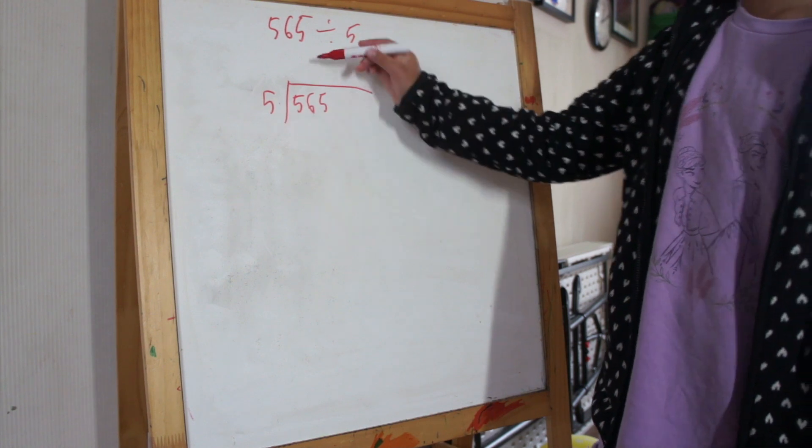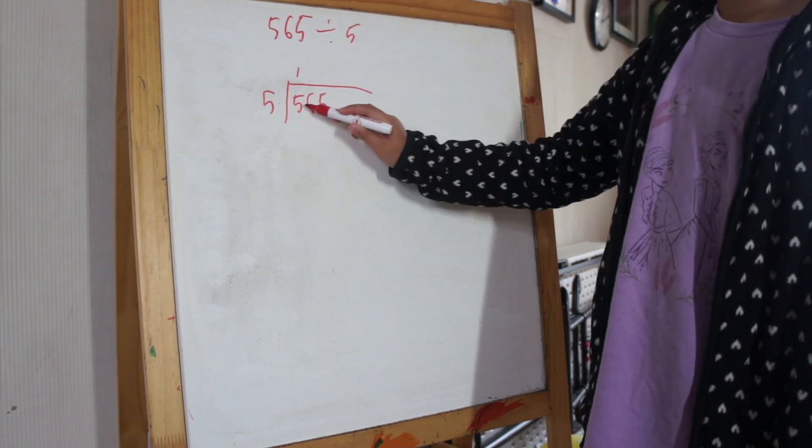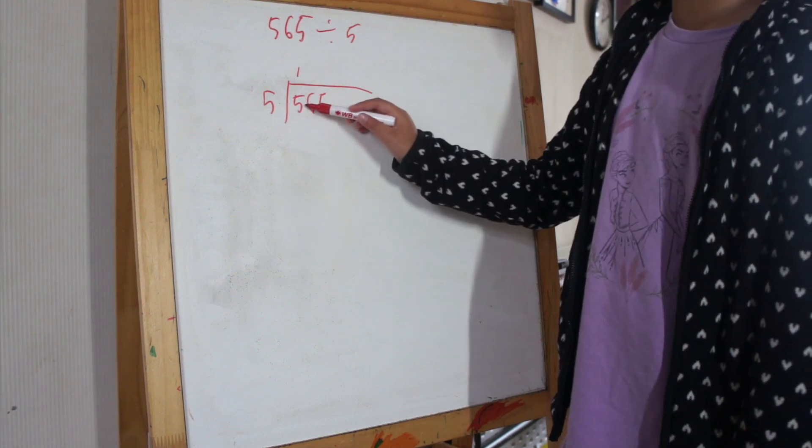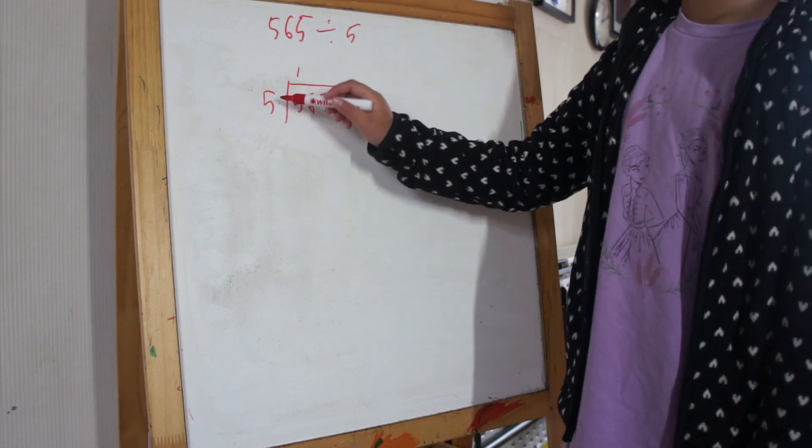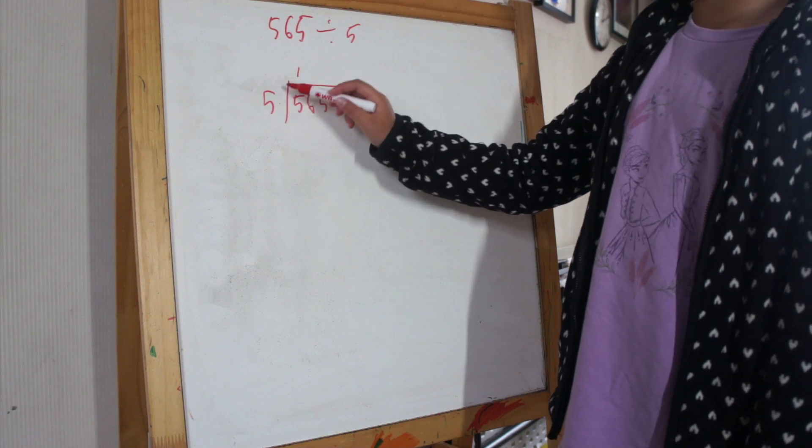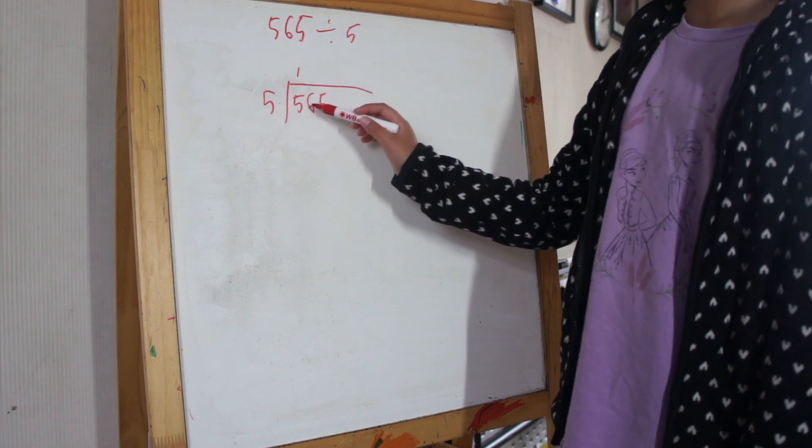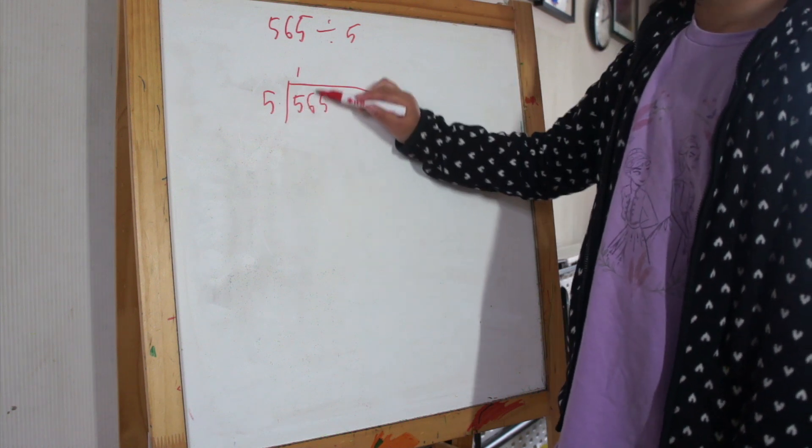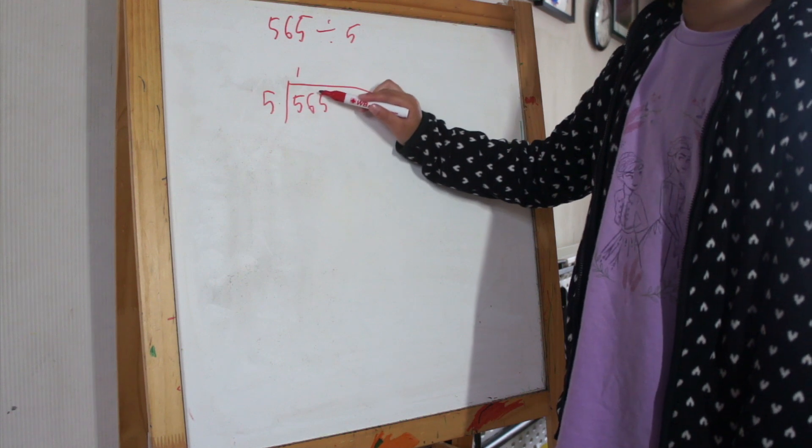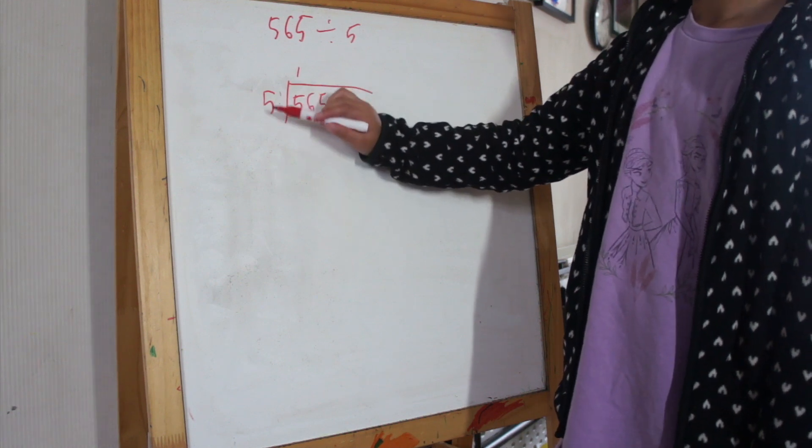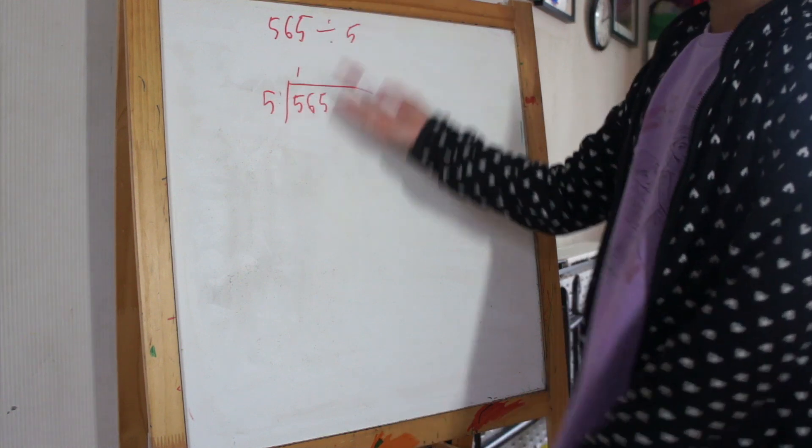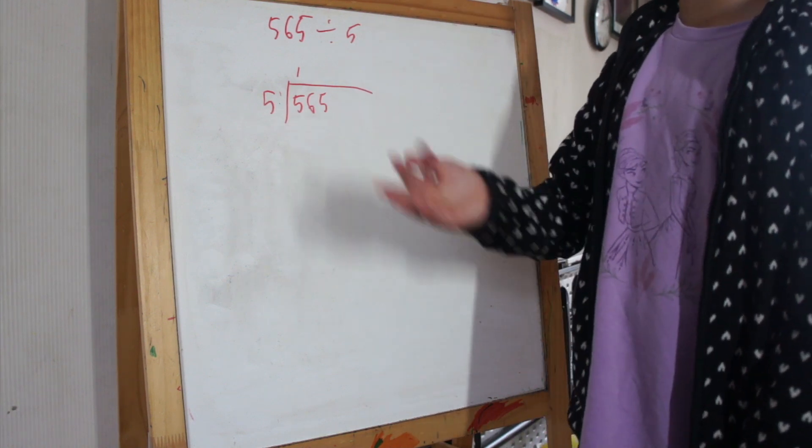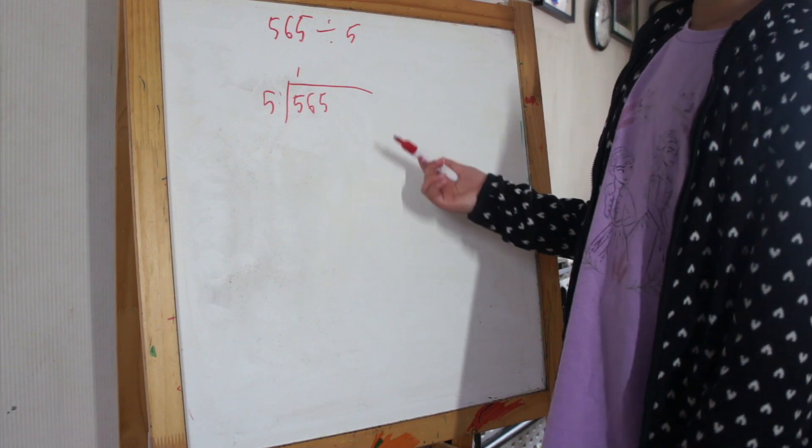Also, if this was 1 and 5 couldn't make that 1, you'd have to go to the next number, and that makes 16. Then you have to think what makes 16 in 5, but that would have 1 left.